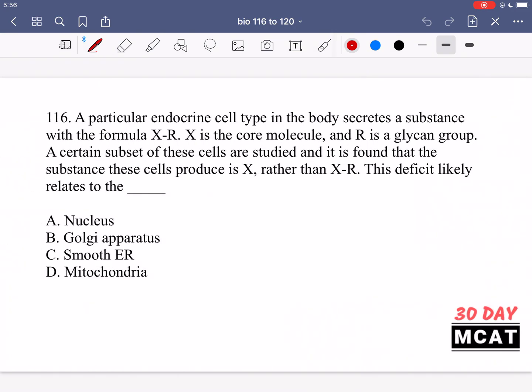Now let's go through the questions together. In question 116, it says a particular endocrine cell type in the body secretes a substance with the formula X-R. In this case, X is the core molecule and R is a glycan group. A certain subset of these cells are studied and it is found that the substance these cells produce is X rather than X-R.